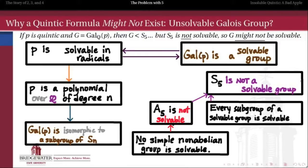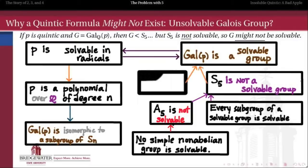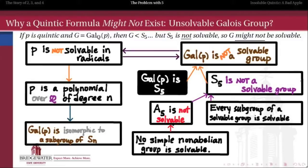So what do we need to do in order to prove that there exists a polynomial that's not solvable in radicals? It would suffice to find a polynomial whose Galois group is all of S5 — in other words, a polynomial where every permutation of its roots is realized by an automorphism of its splitting field over Q. Because if such a polynomial exists, then its Galois group is not a solvable group, and because this implication is a biconditional, that will imply that that polynomial is not in fact solvable in radicals.